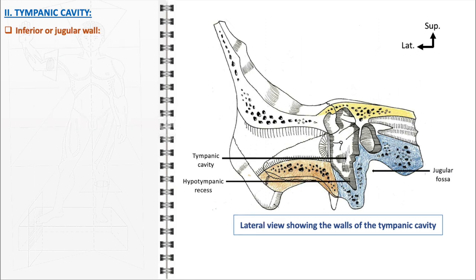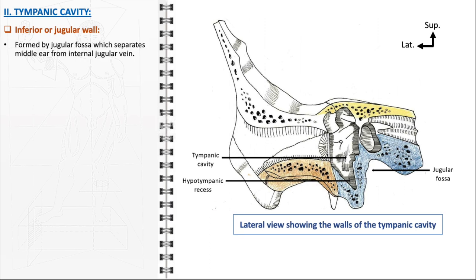The inferior or jugular wall of the tympanic cavity is primarily formed by the jugular fossa, a significant depression in the temporal bone. The jugular fossa plays a crucial role in separating the middle ear from the internal jugular vein, providing a protective barrier that prevents the spread of infections or diseases between the ear and the vascular system.